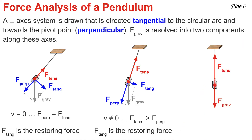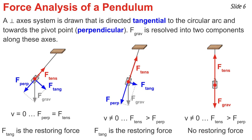Finally, at the resting position, there is no component of gravity tangent to the circle, nor does there need to be one — the pendulum bob is transitioning from speeding up to slowing down. At this point the only component of net force needed is directed upwards towards the pivot point, so the tension force is greater than the perpendicular component of gravity to cause the centripetal acceleration. There is no restoring force, and no tangential component of gravity, at the resting position.